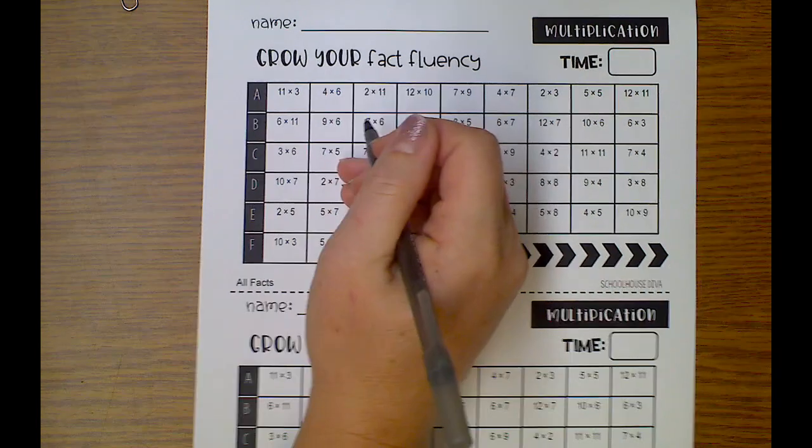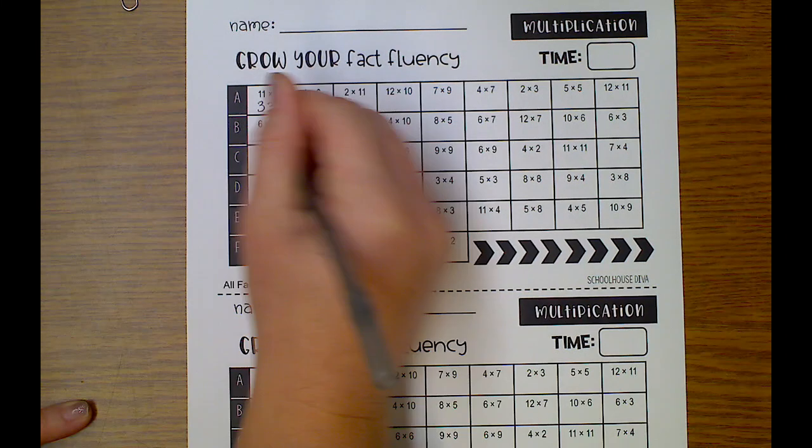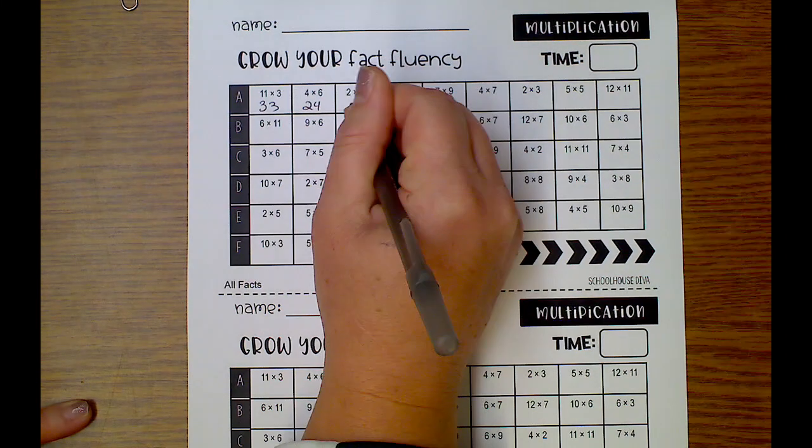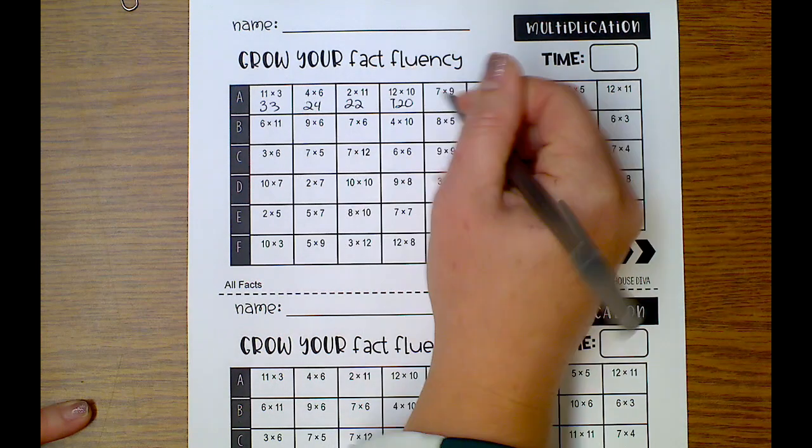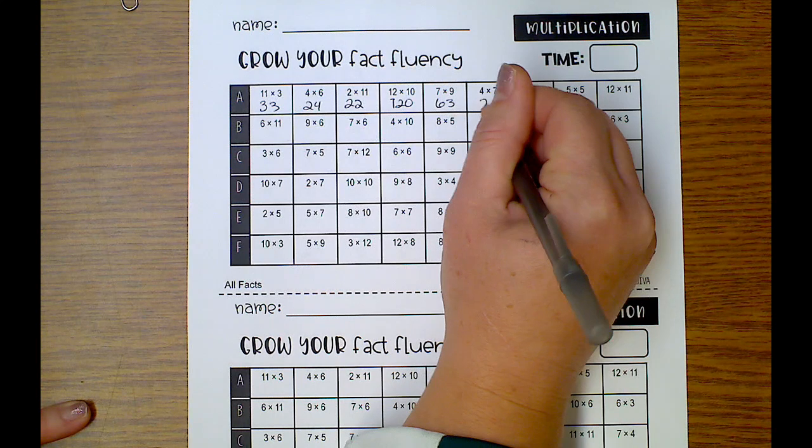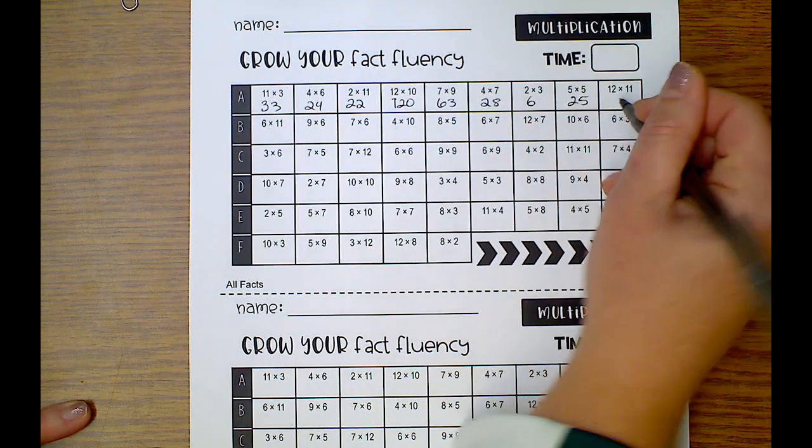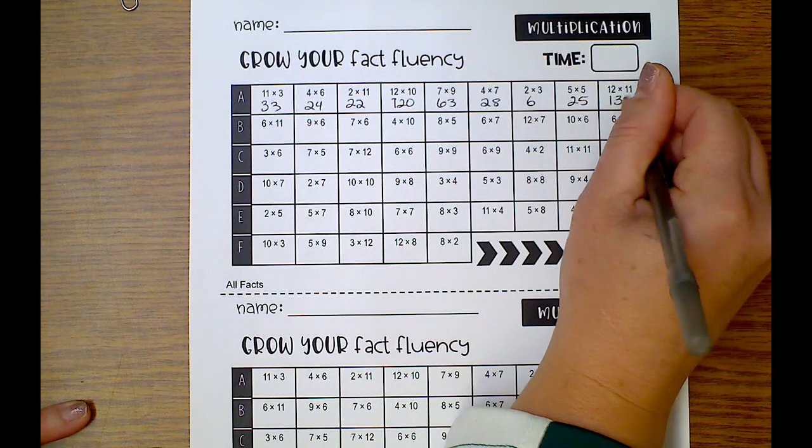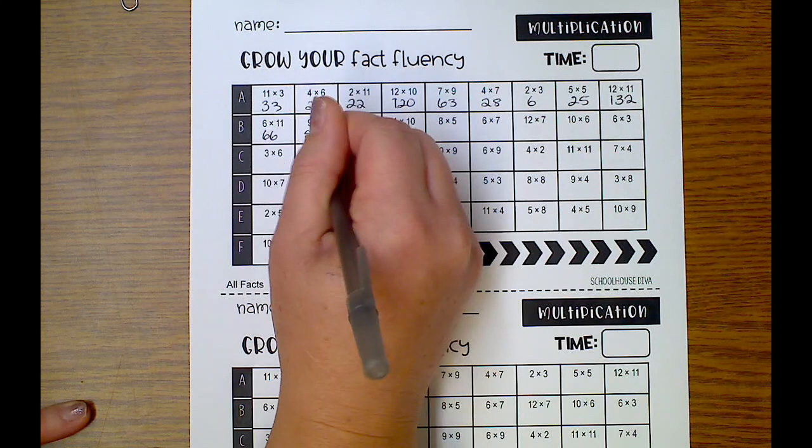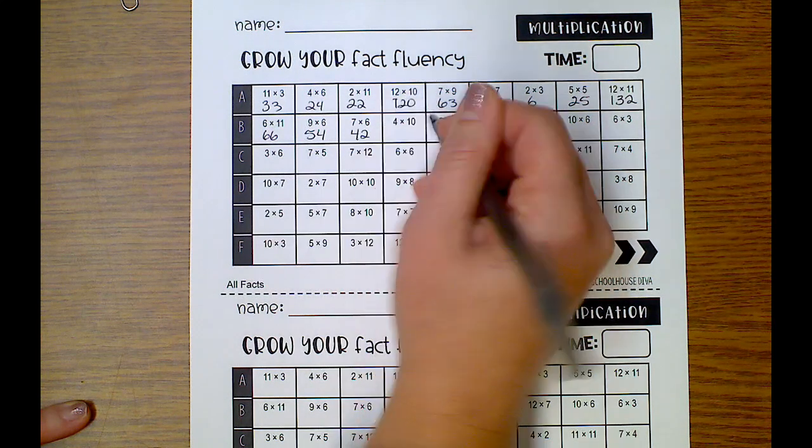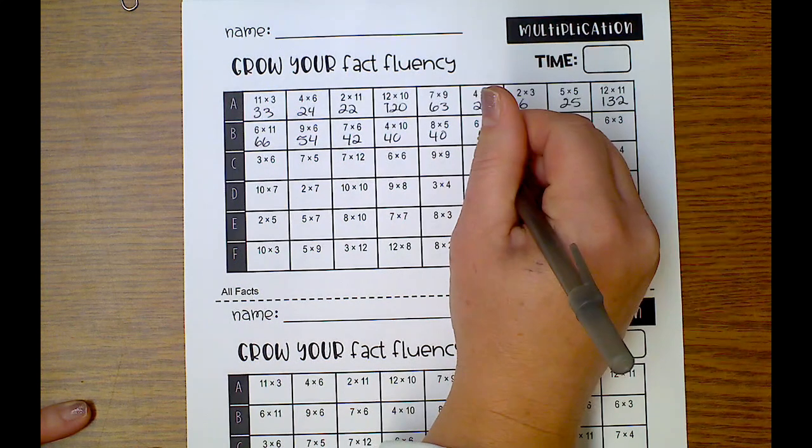All right, so next is mixed facts. 11 times 3 is 33, 4 times 6 is 24, 2 times 11 is 22, 12 times 10 is 120, 7 times 9 is 63, 4 times 7 is 28, 3 times 2 is 6, 5 times 5 is 25, 12 times 11 is 132, 6 times 11 is 66, 9 times 6 is 54, 7 times 6 is 42, 4 times 10 is 40, 8 times 5 is 40, 6 times 7...